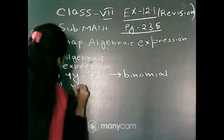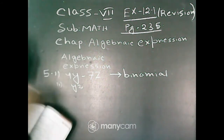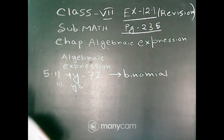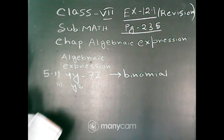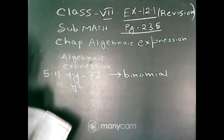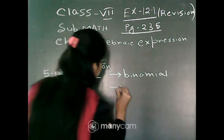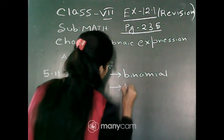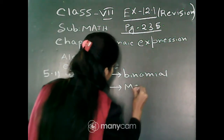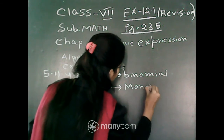Next question: y square. This algebraic expression contains only one term, that is y square. So it is a monomial.